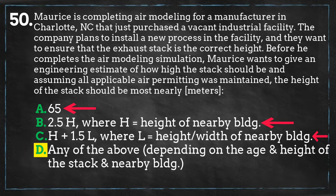Therefore, the answer is D. Any stack built prior to December 30, 1970 is grandfathered and is exempt from the good engineering practice stack height requirements. When determining compliance with air quality standards using air modeling technology, the stack height must be less than or equal to the good engineering practice stack height within the model.